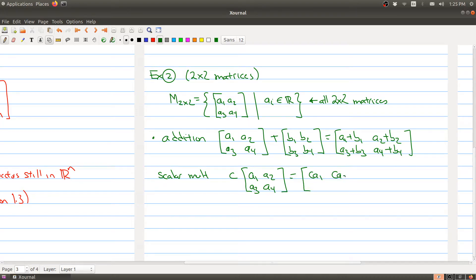So C A1, C A2, C A3, and C A4. Now this operation is closed, right, because we produce new matrices. So the operation satisfies 1 and 6, and that's because the operation produces 2 by 2 matrices.